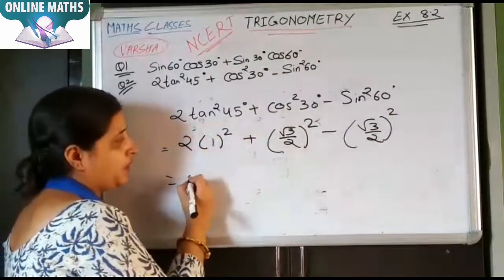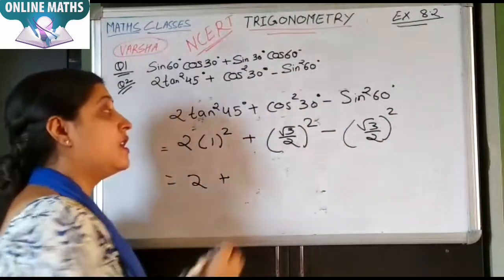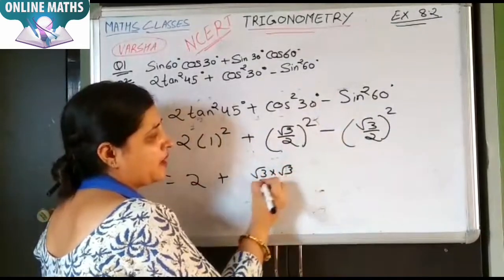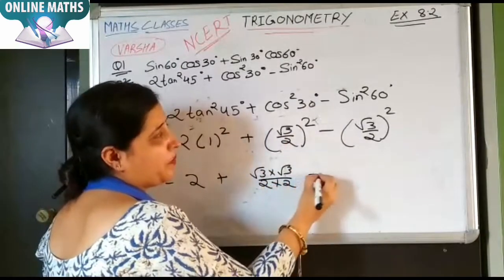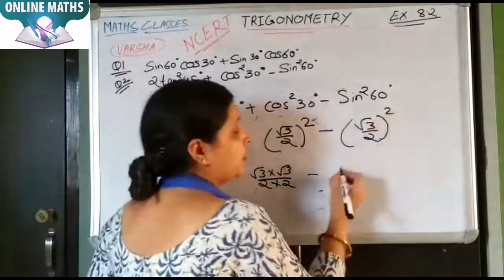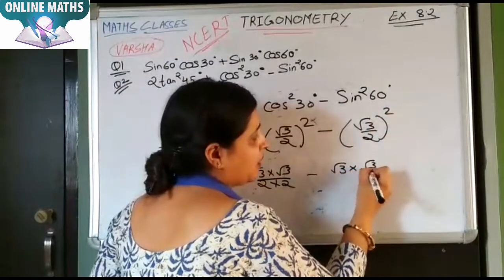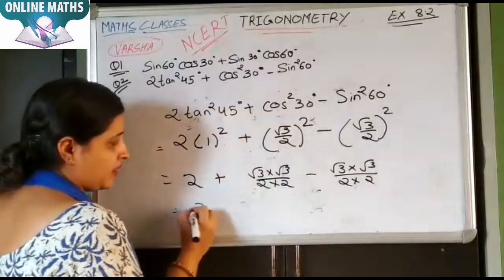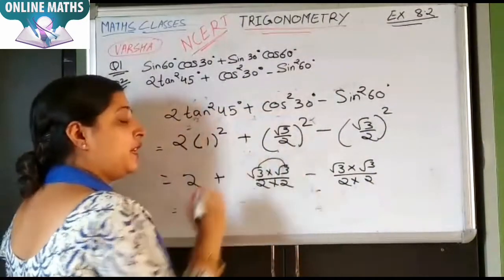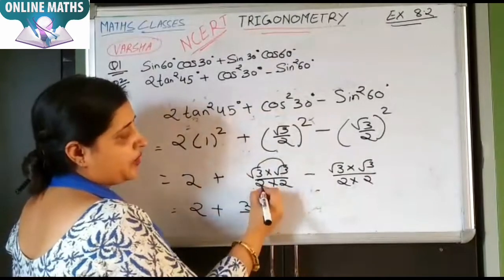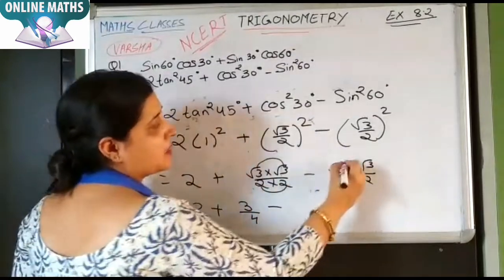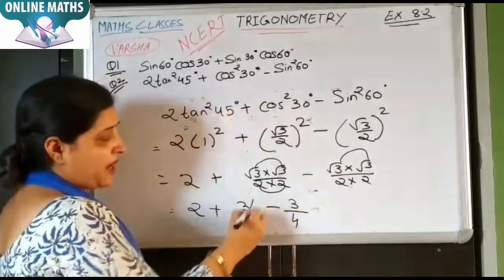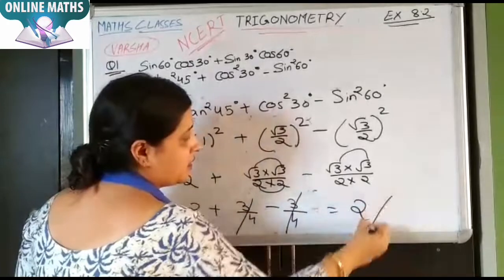Now simplifying: 1 squared is 1, so 1 into 2 is 2. Plus root 3 squared — root 3 into root 3 — over 2 squared which is 4. Minus root 3 into root 3 over 2 into 2. That gives 2 plus 3 by 4 minus 3 by 4. The 3 by 4 terms cancel, which means the answer is 2.